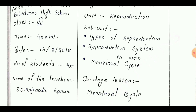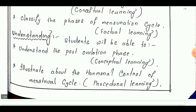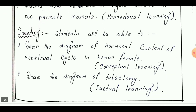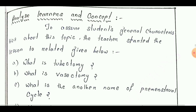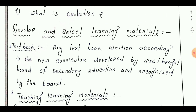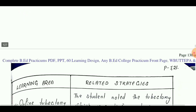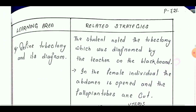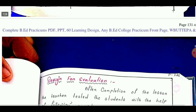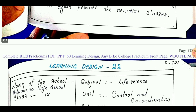Learning design number 21 is taken from Class 7. Today's lesson is 'Menstrual Cycle.' Learning goals are: remembering, understanding, applying, analyzing, evaluating, and creating. Next is analyze learner and concept, then develop and select learning materials. Next is learning strategy covering learning area and related strategies, including use of technology. Then design for evaluation, and the last point is diagnosing the weakness for remedial class.